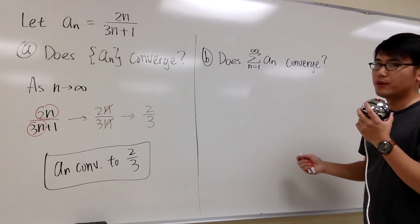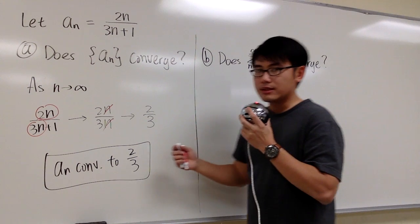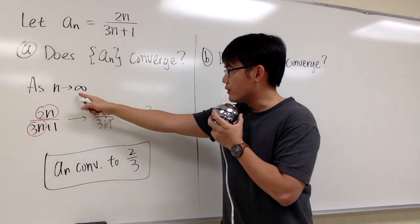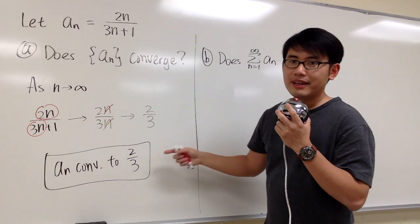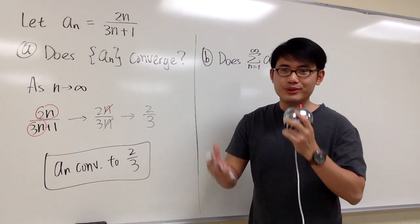Does the series converge? Do we get a finite sum? So one way to do it is let's worry about what will happen eventually to this formula. As n goes to infinity, we know that a_n approaches 2 thirds. In other words, eventually we pretty much just have 2 thirds, 2 thirds, 2 thirds,